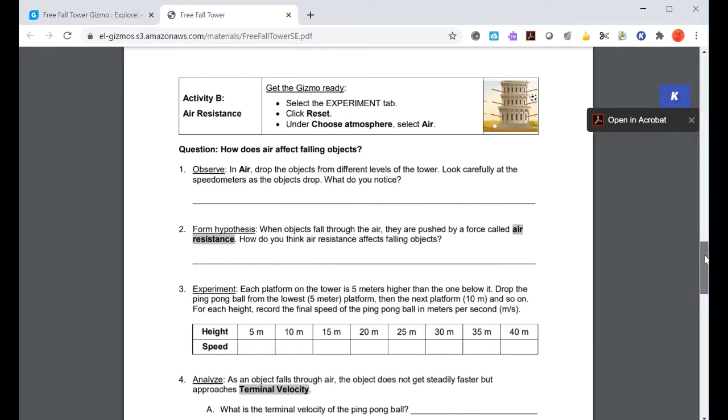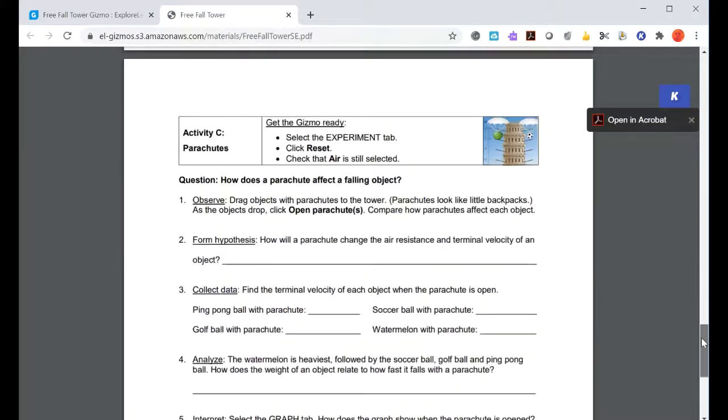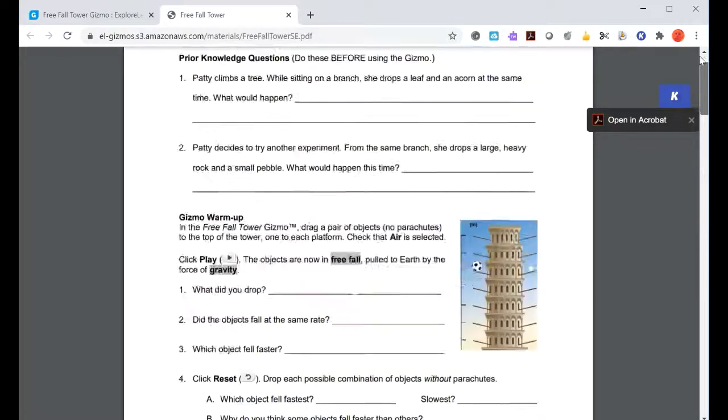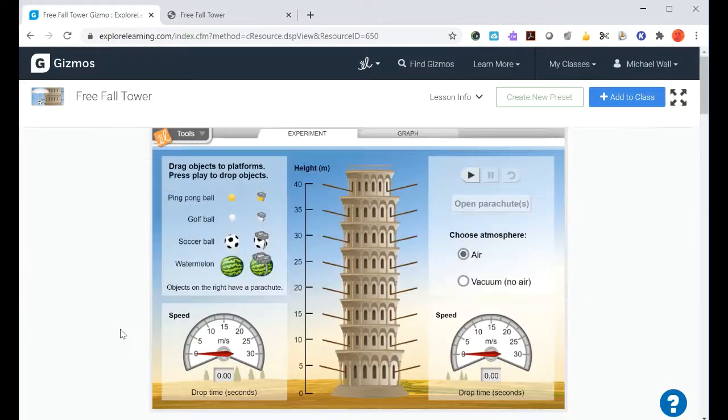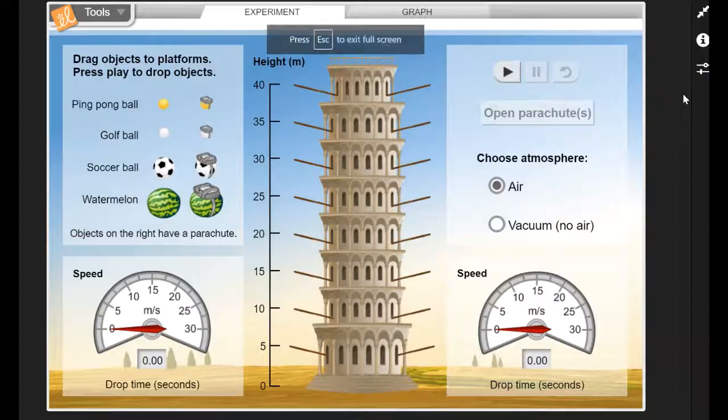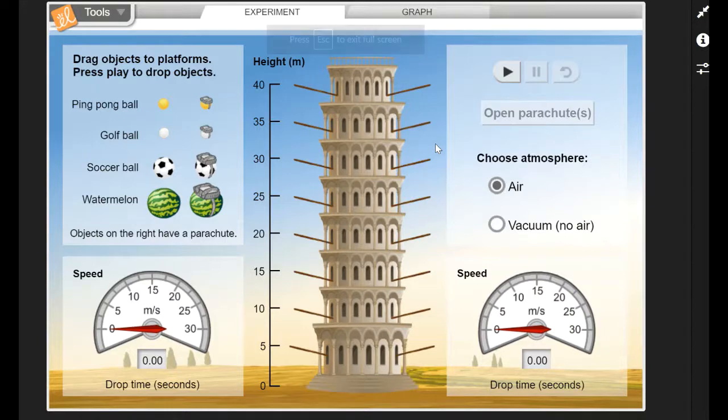Let's make this a little bit bigger. For this particular gizmo, you're going to drop a couple of different items. You've got your items that are over here: ping pong ball, golf ball, soccer ball, watermelon. And on this side over here we have the same items but they have a parachute, so you can pick different ones or you can pick the same one.